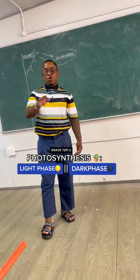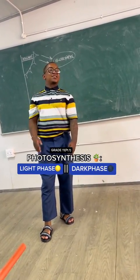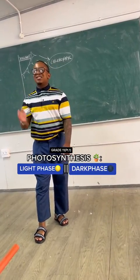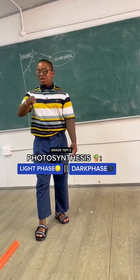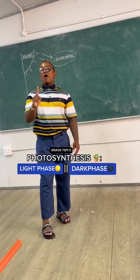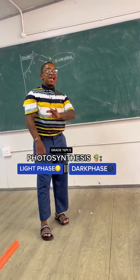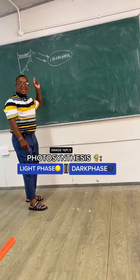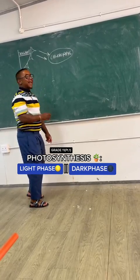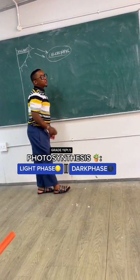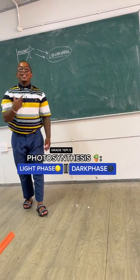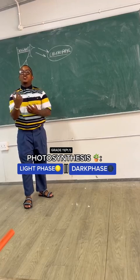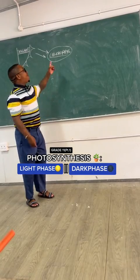From grade 7 you were told about different species and the process where plants make their own food. Our plants need certain things, one of them includes light. Plants use light by using the pigmentation — the chlorophyll. The chlorophyll attracts light directly from the sun.